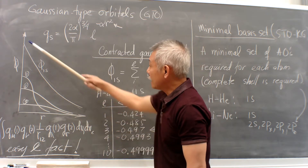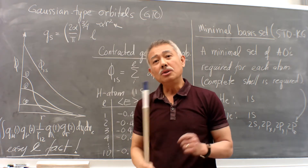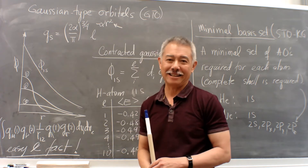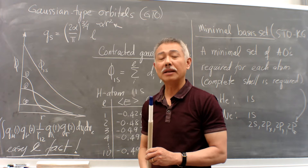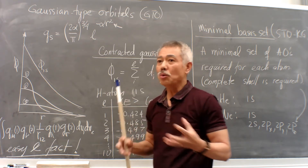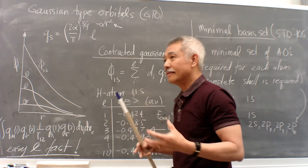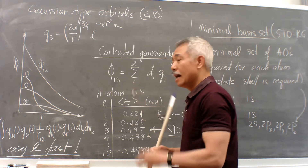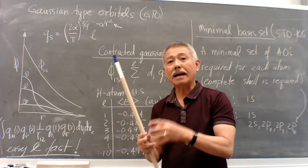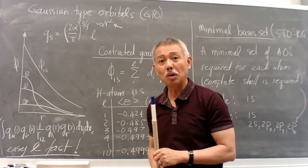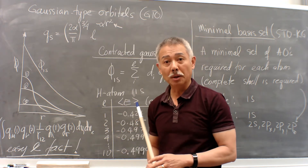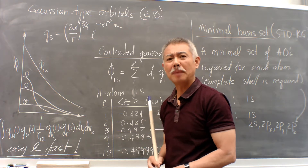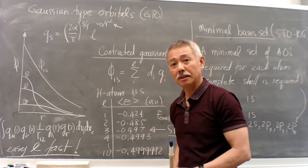That's the key difference. However, using Gaussian functions, these two-electron integrals are easy and fast to calculate. The idea here is to use contracted Gaussians — we take a number of Gaussians, pack them together, and fit them to these Slater-type orbitals or the hydrogen-like orbitals. It's the same expansion idea.